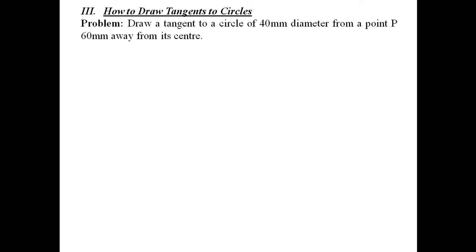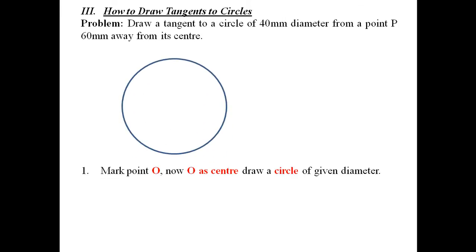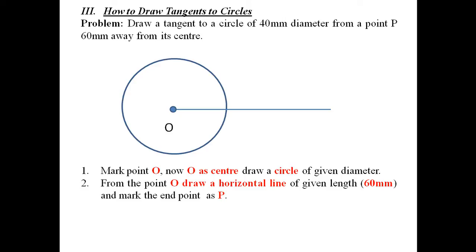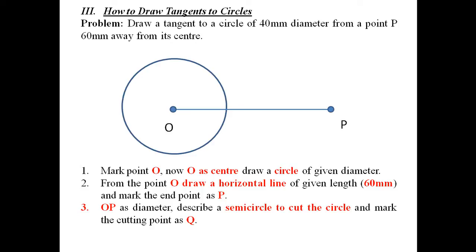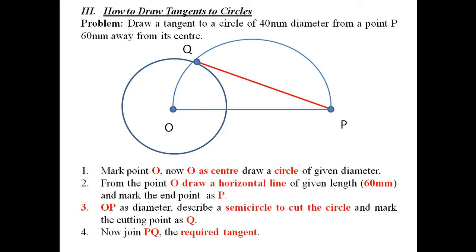The next problem is how to draw tangents to circles. Draw a tangent to a circle of 40 mm diameter from point P, 60 mm away from its center. First draw the circle and mark center O. From O, draw a horizontal line of 60 mm and mark point P. Draw a semicircle fitting to OP. This semicircle intersects the given circle of 40 mm diameter at point Q. Join PQ — that is the required tangent to the circle.